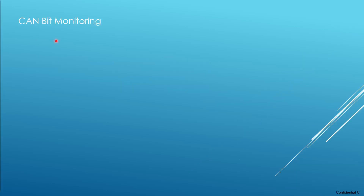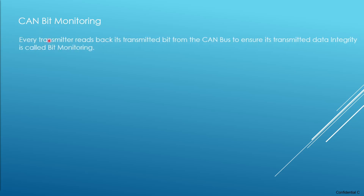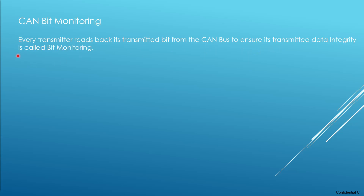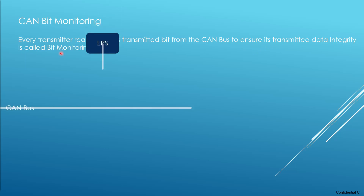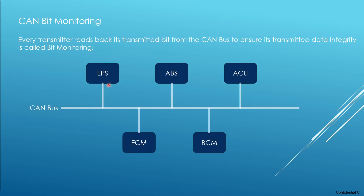So what is CAN bit monitoring? Every transmitter reads back its transmitted bit from the CAN bus to ensure its transmitted data integrity — this is called bit monitoring. Imagine you have a CAN bus connected with multiple nodes. Each node connected to the CAN network will act either as a transmitter or as a receiver. If any node transmits a frame on the CAN bus, all the other nodes will be listeners, and the transmitter itself also reads back the data from the CAN lines to ensure the integrity of the transmitted data.